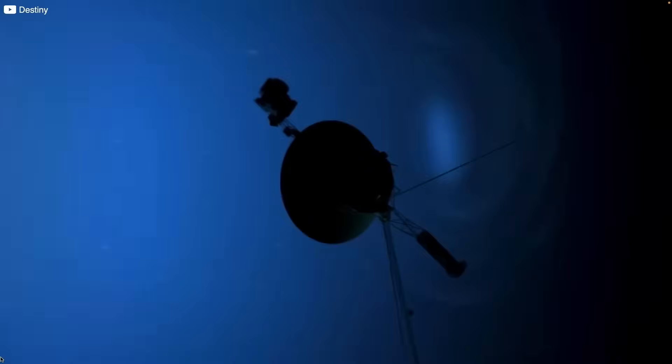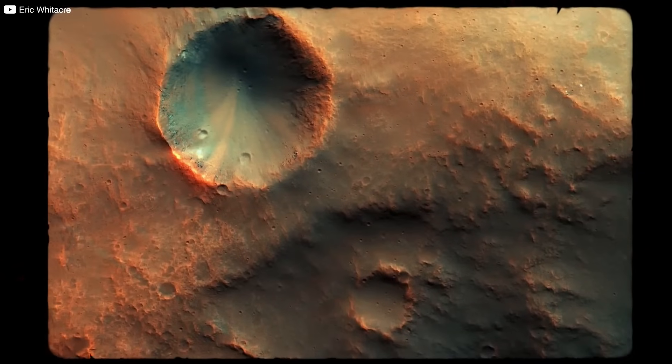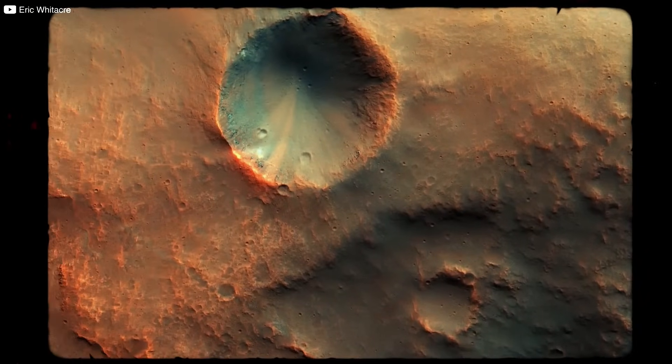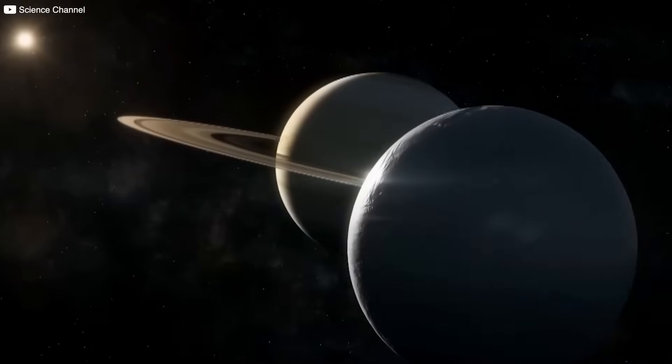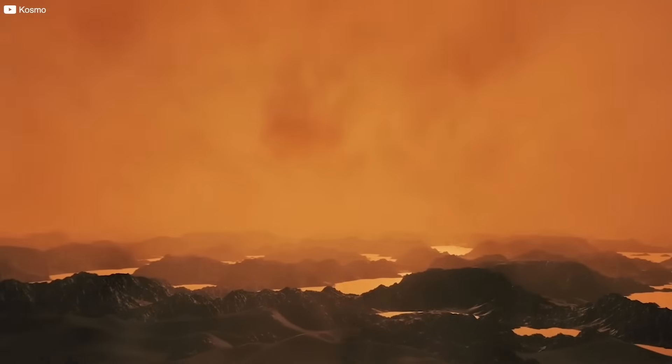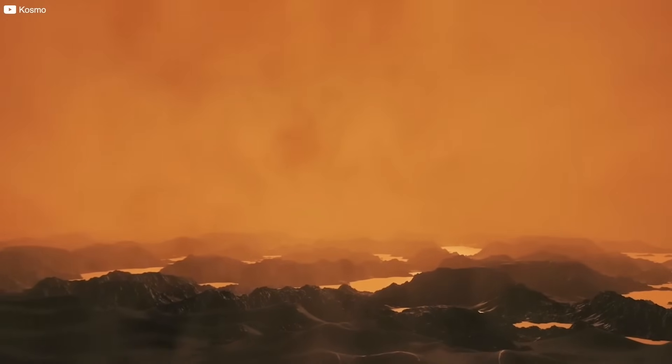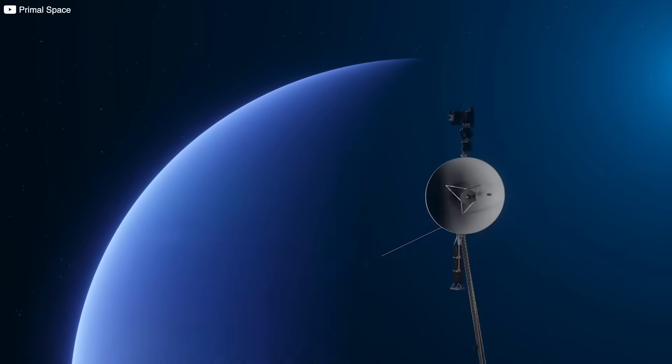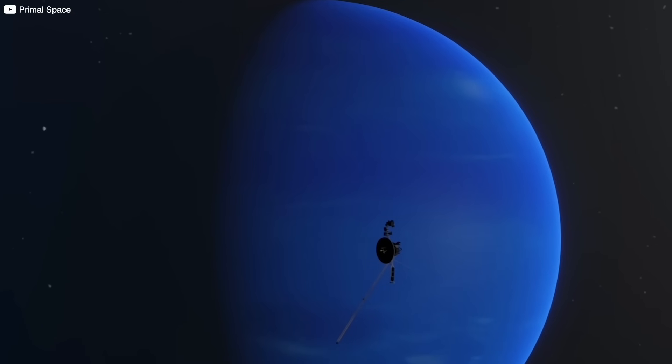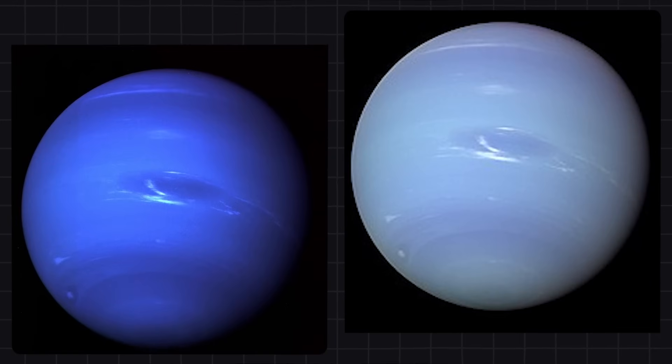Their discoveries were groundbreaking. Voyager 1 captured unprecedented views of Jupiter's Great Red Spot and revealed volcanic activity on its moon, Io, the first active volcanoes observed beyond Earth. Saturn's stunning rings and Titan's hazy atmosphere came into focus. Voyager 2 journeyed even farther, offering humanity its first close-up glimpses of the icy, tilted worlds Uranus and Neptune.